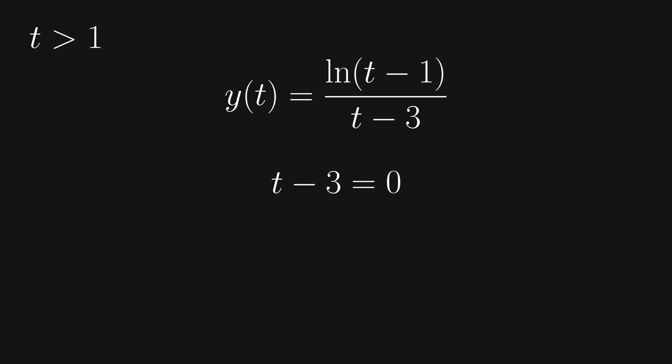Also, remember that the denominator of a fraction can't be 0. If we add 3 on both sides, we see that we have an asymptote at t equals 3.